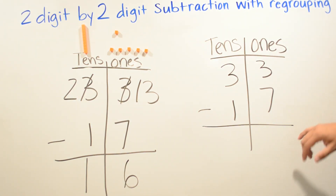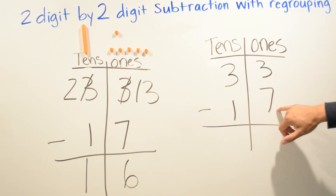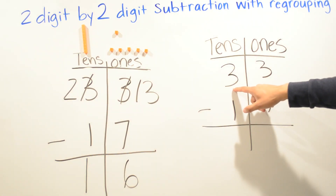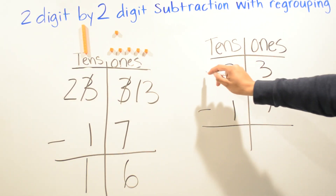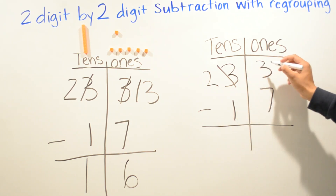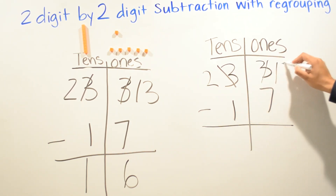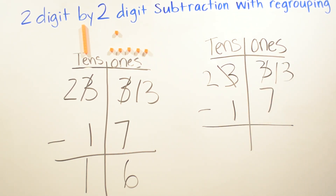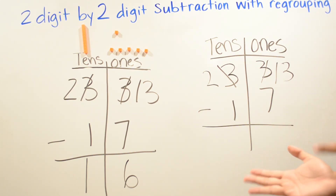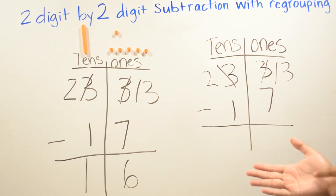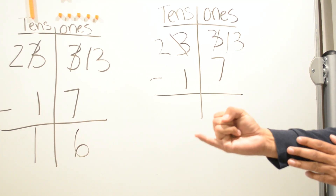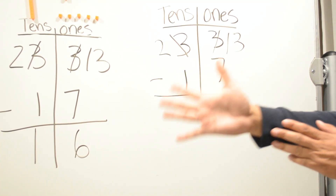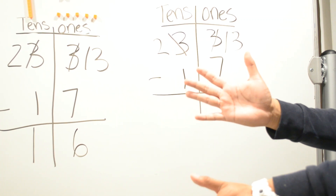The other way to solve this one is the same: more on the floor — go next door and get ten more. We borrow, so this three becomes a two and this three becomes a thirteen. We keep seven in our head, start from seven, and we're gonna stop at thirteen: seven, eight, nine, ten, eleven, twelve, thirteen.